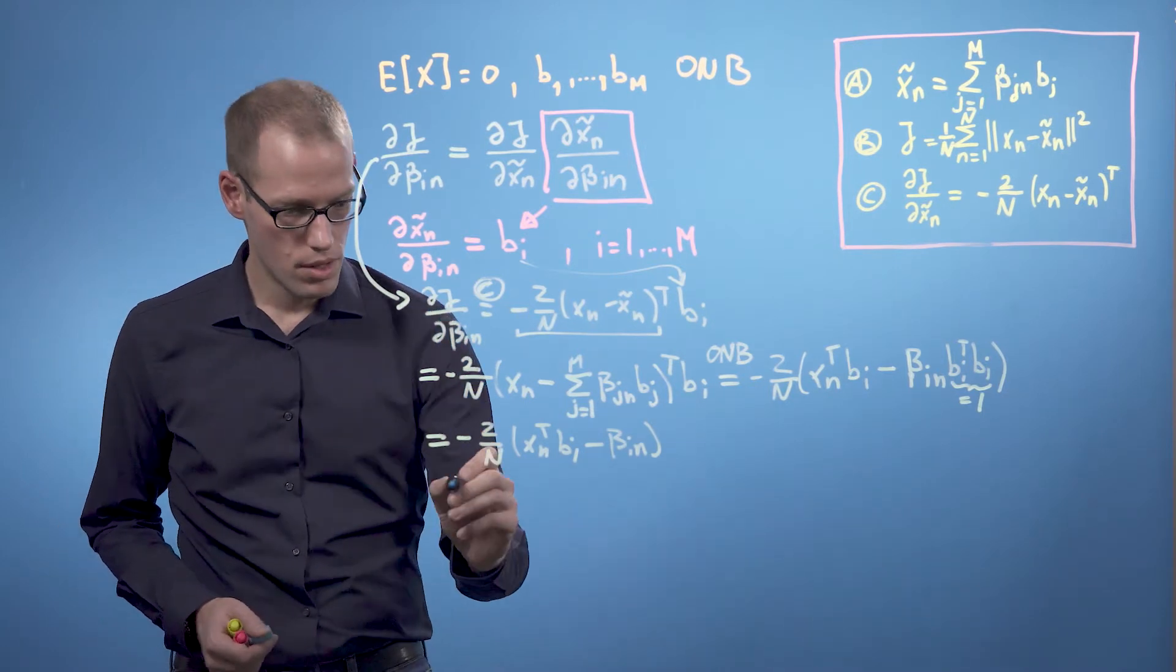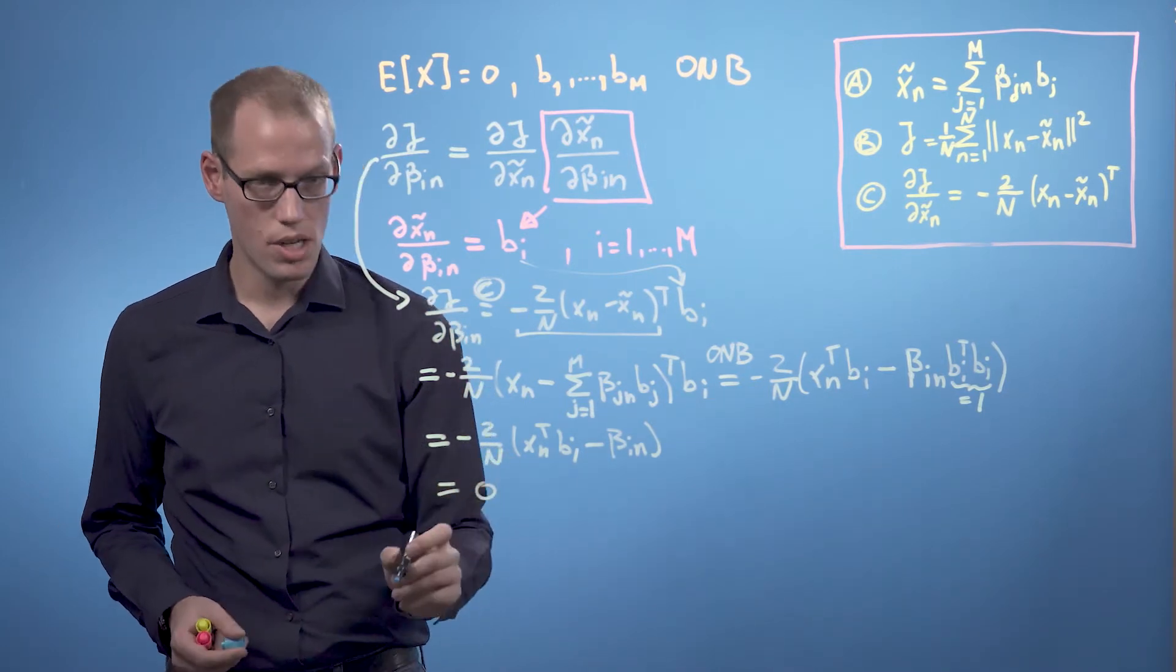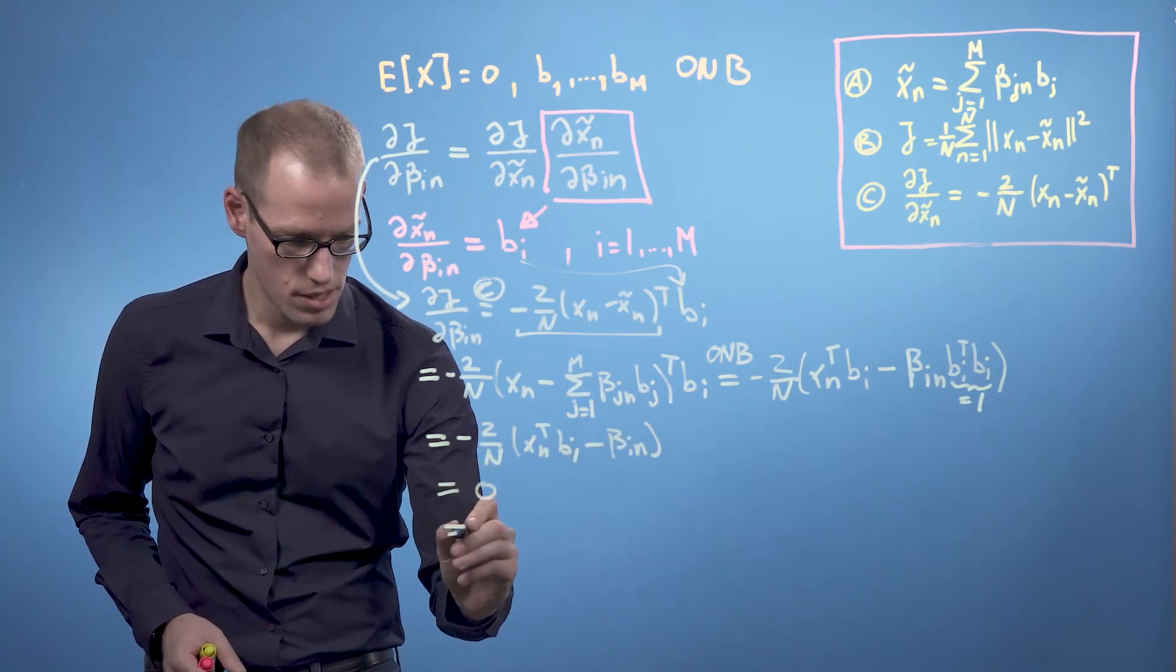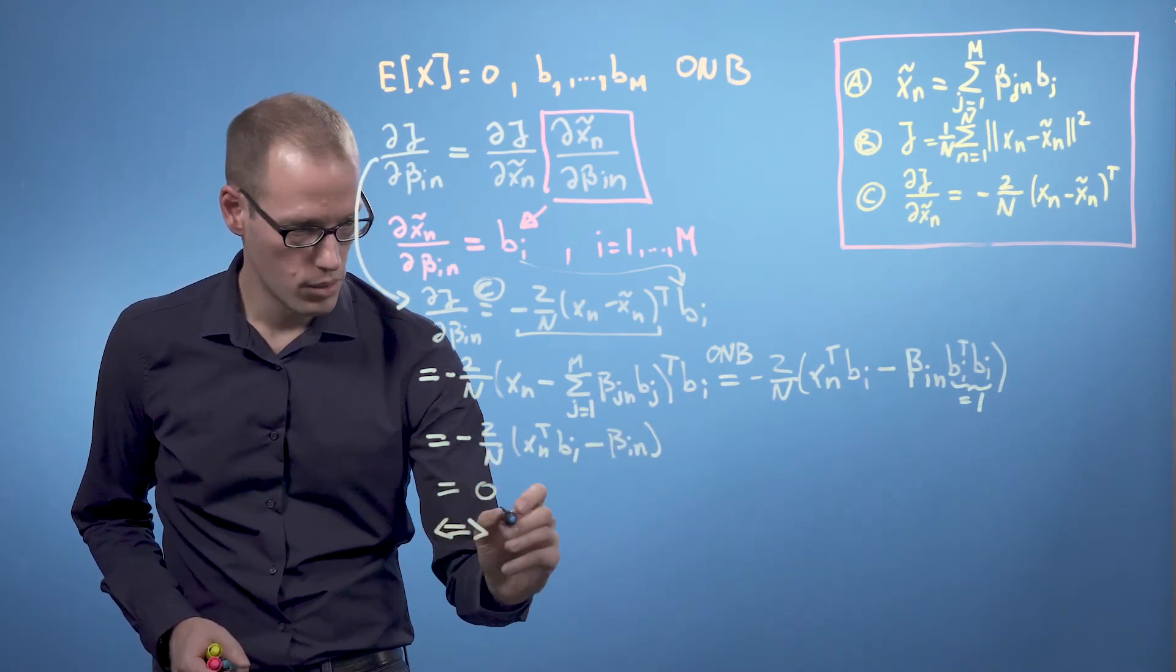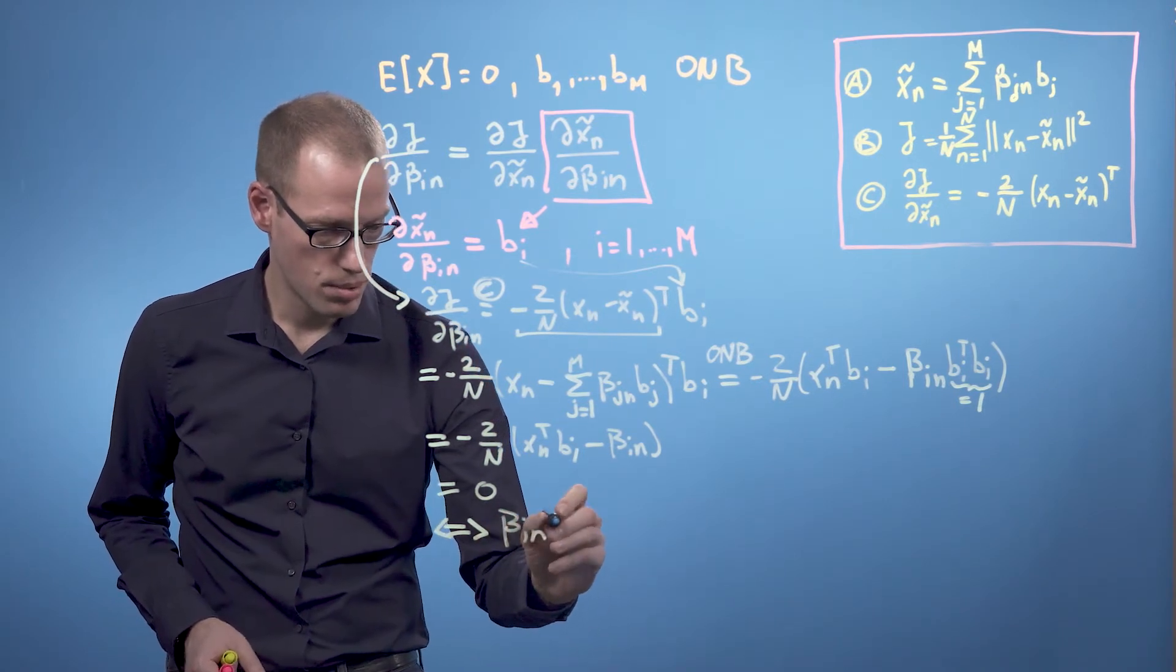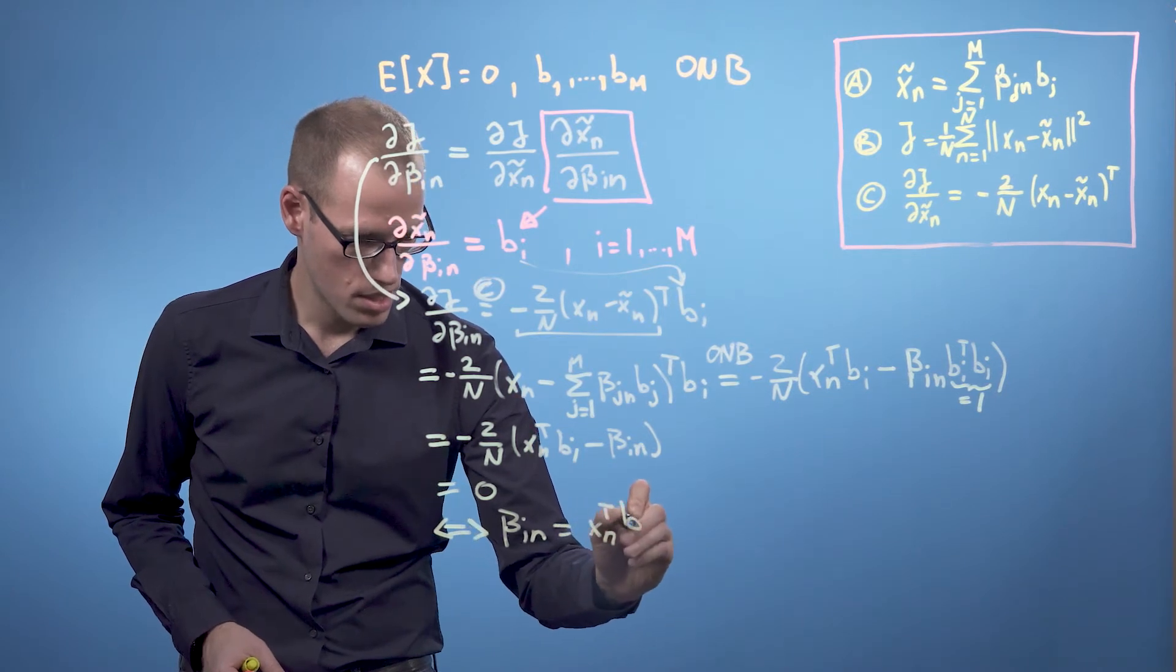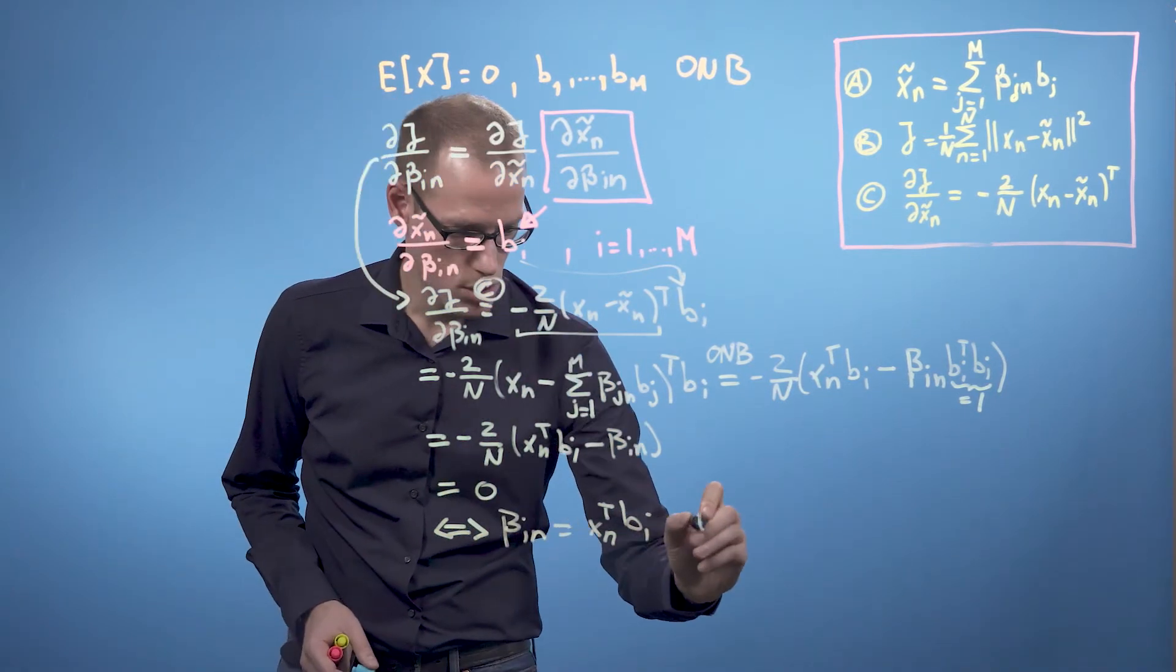So now we need to set this to zero in order to find our beta in parameters. And this is zero if and only if the beta in parameters are given by xn transpose times bi, which we're going to define as equation d.